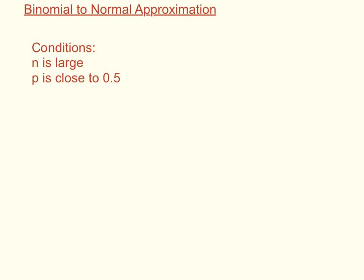In this video we're going to be looking at how to approximate the binomial distribution to the normal distribution. The conditions for this to happen is that n must be large and p must be close to 0.5. If p is close to 0.5 it will give a distribution very similar to the normal distribution, it will give a sort of bell curve.